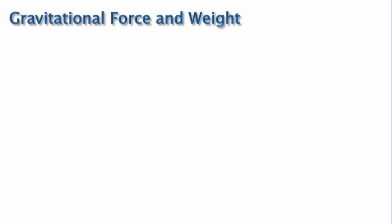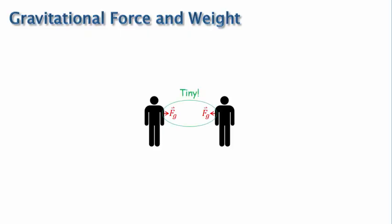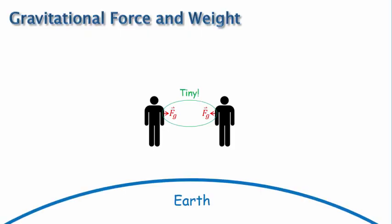We talked briefly about gravity in a previous video. In that video, we said that all objects are drawn together by the force of gravity. But the force is often so small that we don't notice it unless one of the objects is really massive, like the Earth. Then we get a larger gravitational force that we all know as the weight of an object.